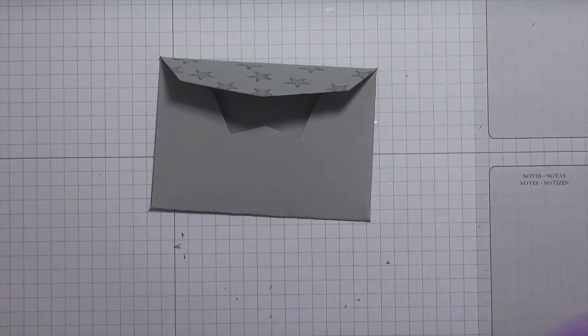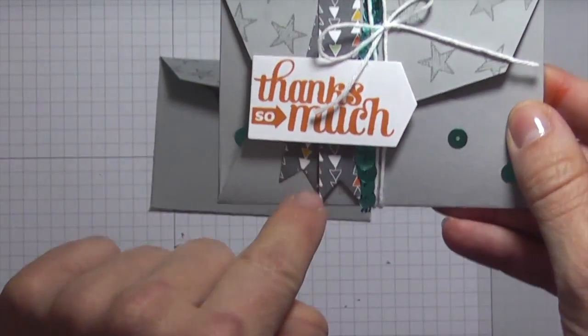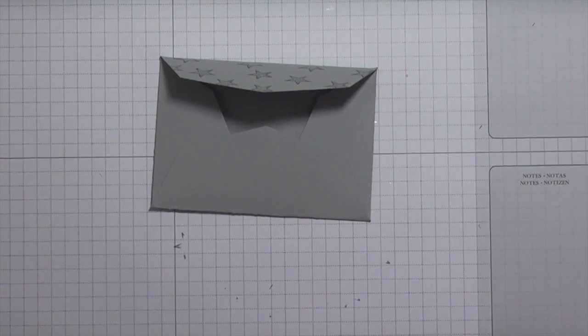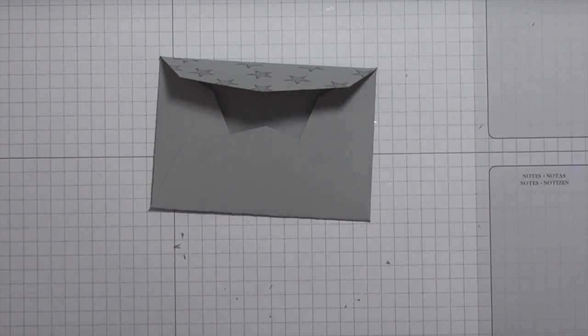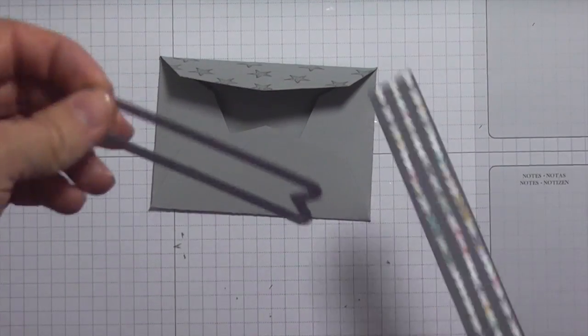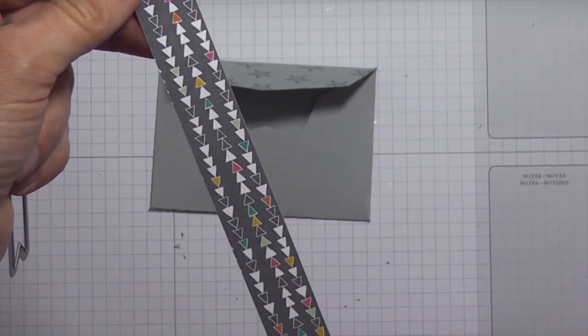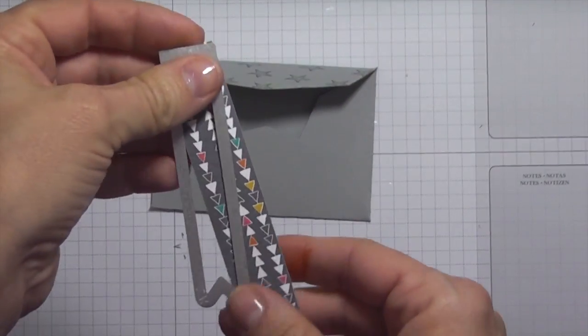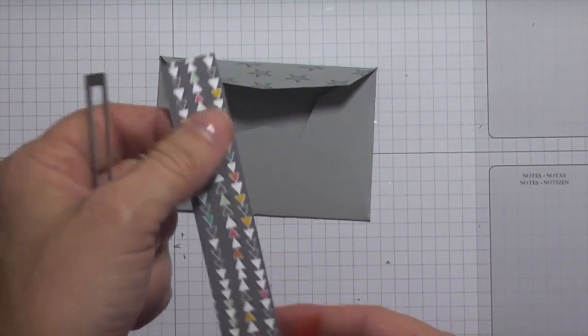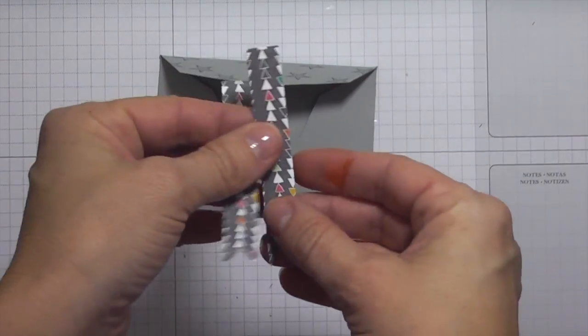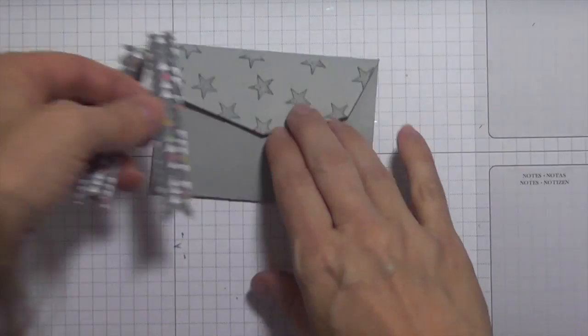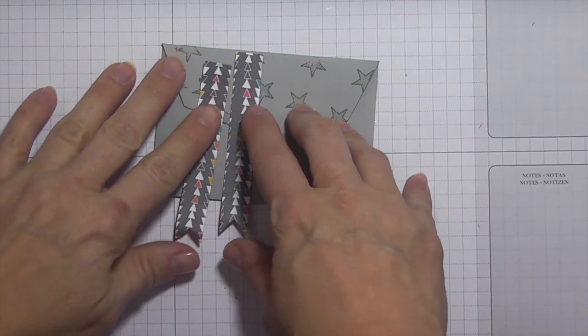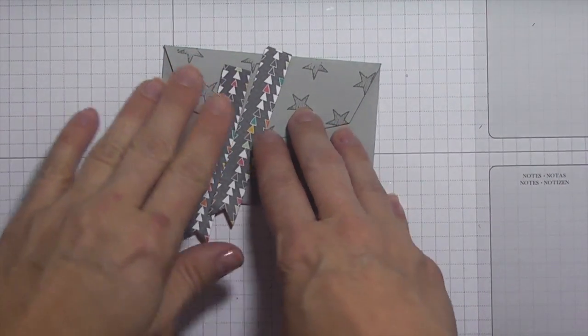Here you can see these fun little banner pieces, and that is using another die from the gift card envelope and trims thinlit die. I just cut off a real small strip of the designer series paper, that confetti celebration, and I'm just going to cut out two of these in my big shot. Here's my two little banners. I'll put these on a little bit later and cut them to two different lengths so that one overlaps and has a layered effect.